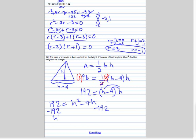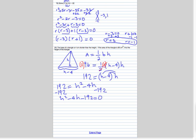We get h squared minus 4h minus 192 is equal to zero. So we're looking for two numbers that multiply to give us negative 192 and they add to negative 4.